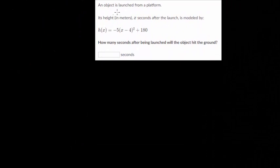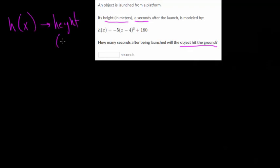We have an object launched from a platform. Its height in meters, x seconds after the launch is modeled by this equation. And how many seconds after being launched will the object hit the ground? So let's start with our variables. H(x), that's the height in meters.